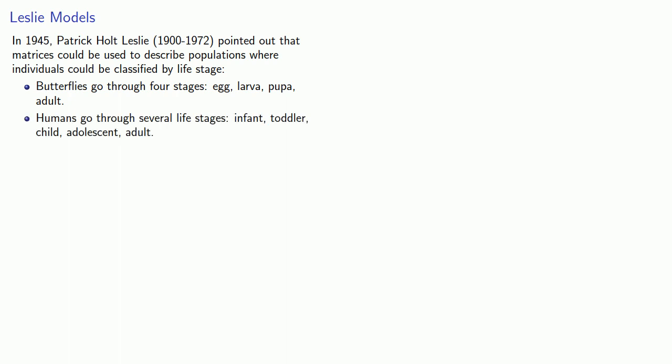Products go through several life stages: design, beta, release, recall, and obsolescence. And any time we can describe how an individual moves through a set of stages, we can use a Leslie model to describe the population.